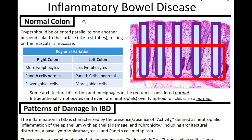We'll talk a little bit about normal colon. In a normal colon, the crypts should be oriented parallel to one another, classically referred to as test tubes in a rack. Whenever the crypts differ or vary from this parallel orientation, that's when you're worried about architectural distortion. Those test tubes in a rack come down to rest on the muscularis mucosa layer in the colon.